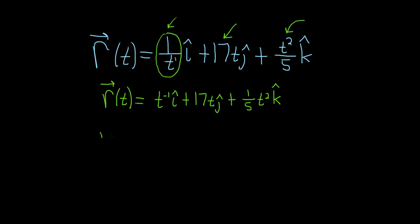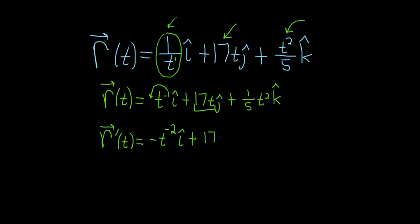Now let's go ahead and find the derivative. So r′(t) is equal to — here we use the power rule. We put the negative 1 in the front, so we get negative t to the negative 2 î, plus. The derivative of 17t is just 17, so that's 17ĵ.